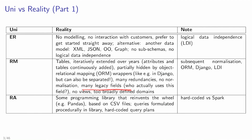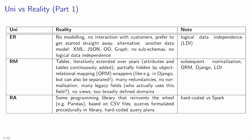You see legacy fields: attributes that are not used by any application but are still in the database. There are no views, so you directly access those tables without shielding them. You also see too broadly defined domains. It's always a good idea to think about what the domain and type of values you want in a column should be, and often it's picked way too broadly.